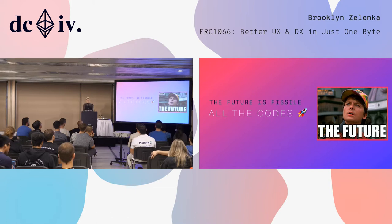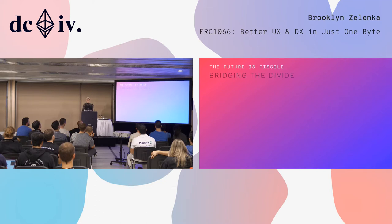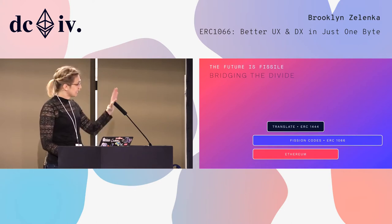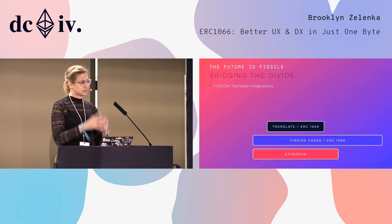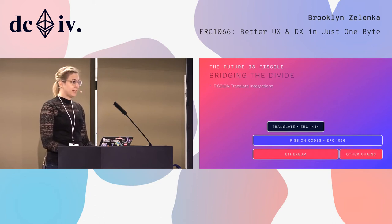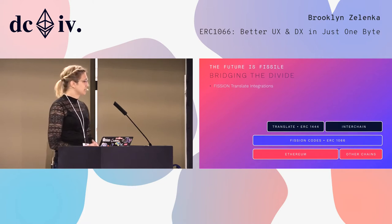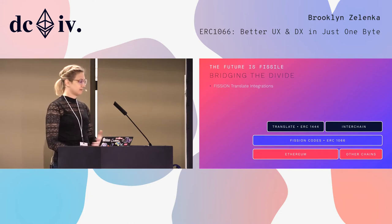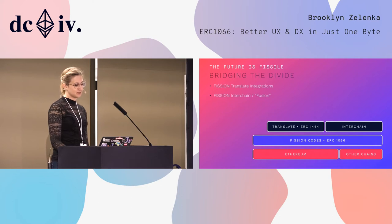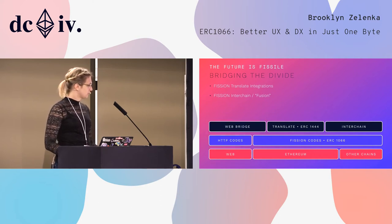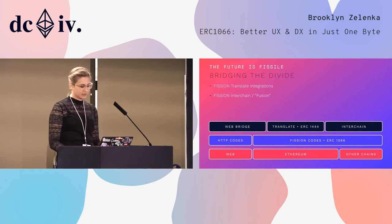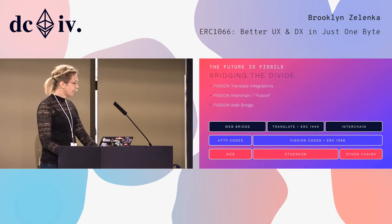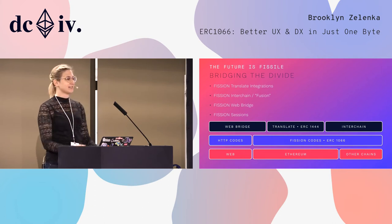We have some further directions for the future. Because this is fairly portable, what we have today is Ethereum with ERC 1066 and 1444, which gives us translation and integrations with wallets and dApps. Being one byte, it runs on every computer ever — so we can do this interchain and do message passing across to, say, the ETC Peg Bridge or across to other chains. And with the web, because we can map 256 status codes into the 63 or so HTTP codes that exist, we can have an automatic Ethereum-to-HTTP web bridge. And we're also looking at pausable sessions or multi-transaction sessions as well.